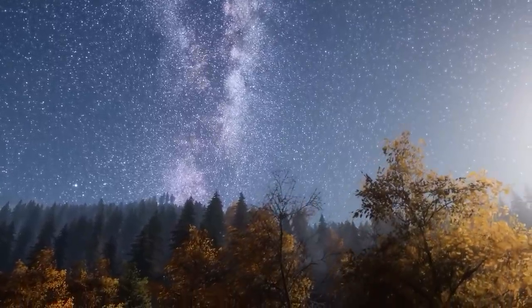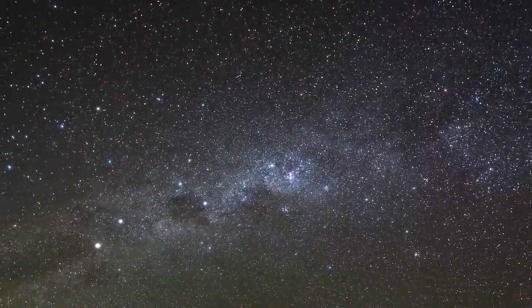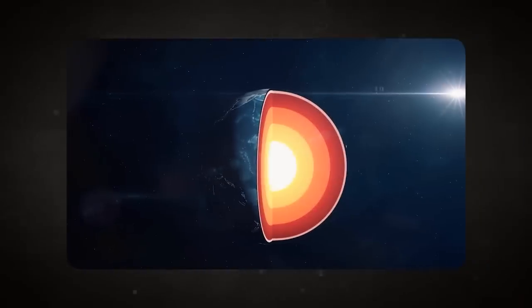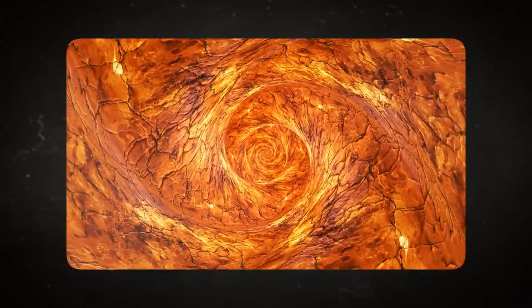The Earth's core lies beneath the thin crust and the 2,900-kilometer solid mantle. The outer core, extending 2,400 kilometers in thickness, consists of molten iron, nickel, and some additional elements.